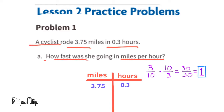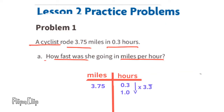Multiplying three-tenths by ten-thirds gives us thirty-thirtieths, which equals one whole. That means we need to multiply both sides by ten-thirds, or 3.3 repeated. After doing the math, you can see that she was traveling at 12.5 miles per hour.